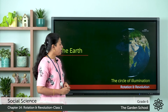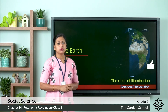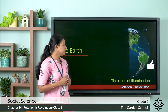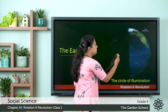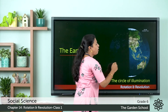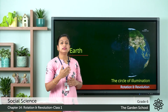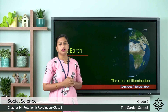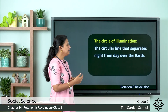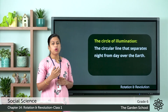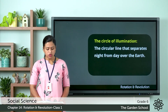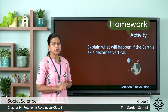Now let us discuss the circle of illumination. The circle of illumination is the circular line that separates night from day over the earth. So this was about the circle of illumination.